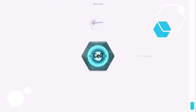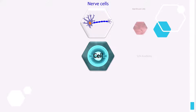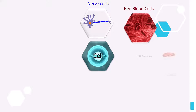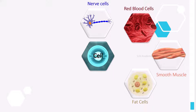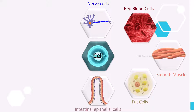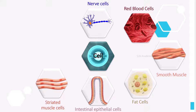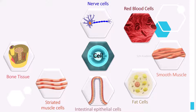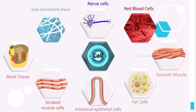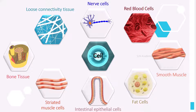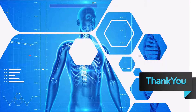These include nerve cells, red blood cells, smooth muscle cells, fat cells, intestinal epithelial cells, striated muscle cells, bone tissue cells, loose connective tissue cells, and more.